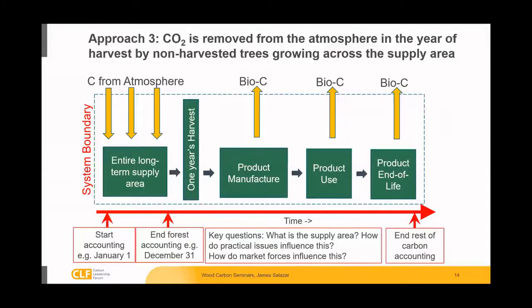I'd like to go back to Reed's slide. This is essentially the same approach as approach three that he was talking about, where in a single year, the amount of carbon entering the forest is greater than the amount of carbon going out of the forest. He did raise a key question of what is the supply area and how does this influence the accounting. The ISO accounting rules refer only to national reporting, but Elaine is going to get into a little more detail on what that looks like if you were to go to a more specific producing region.